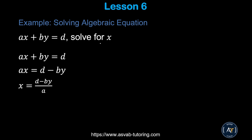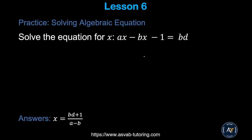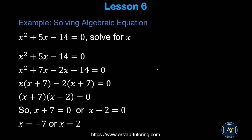Next, we'll learn how to solve an algebraic equation that has only letter variables — no numbers. Many students get confused by this, but it's straightforward. Solve for x: subtract b from both sides, so by and by cancel, leaving x = d − by. Then divide both sides by a, giving x = (d − by) / a. Try the practice problem and confirm your answer.